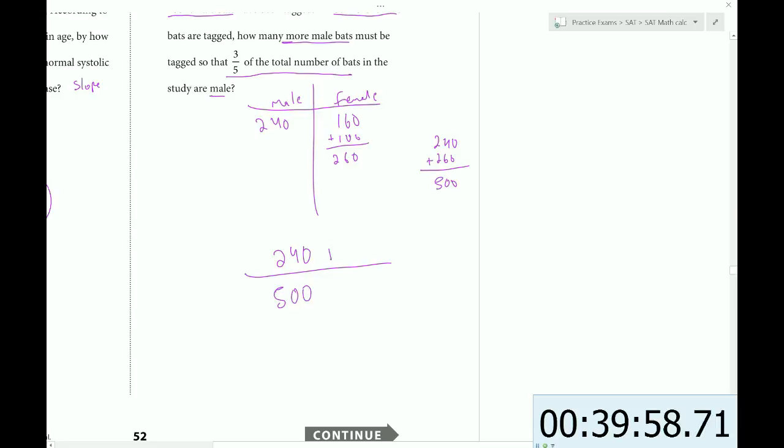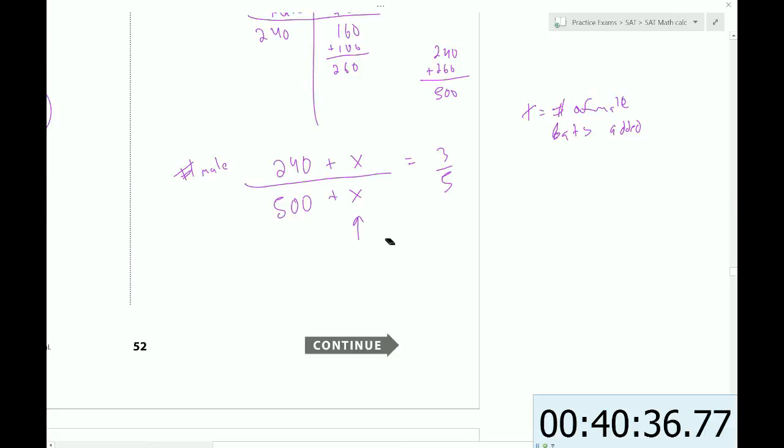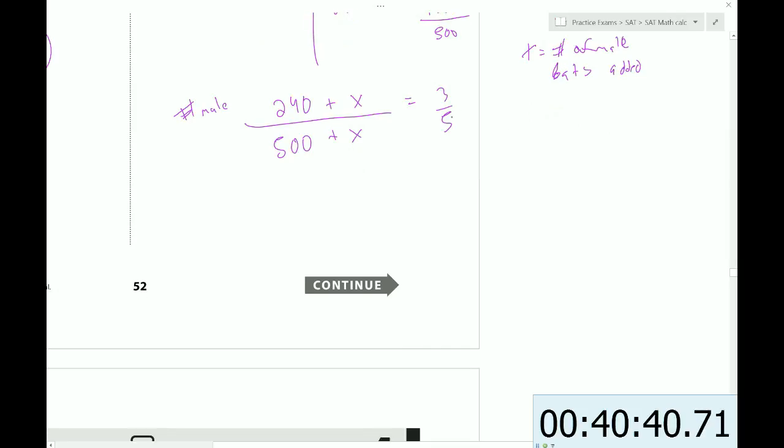So here's the trick for this question. We have to let X represent the number of male bats that we're going to add. Then we would add them to our numerator because our numerator is the number of male bats total. Right now we have 240 and we're adding X. But we also have to add X to our denominator, which is currently 500. But when we add, let's say, 10 more male bats, it's going to be 510, right? And then after having added that, we set it equal to three-fifths. So then we just have to solve this for X. So we have to cross-multiply, remembering that these binomials have parentheses around them. So we get 5 times the quantity (240 + X) equals 3 times the quantity (500 + X).